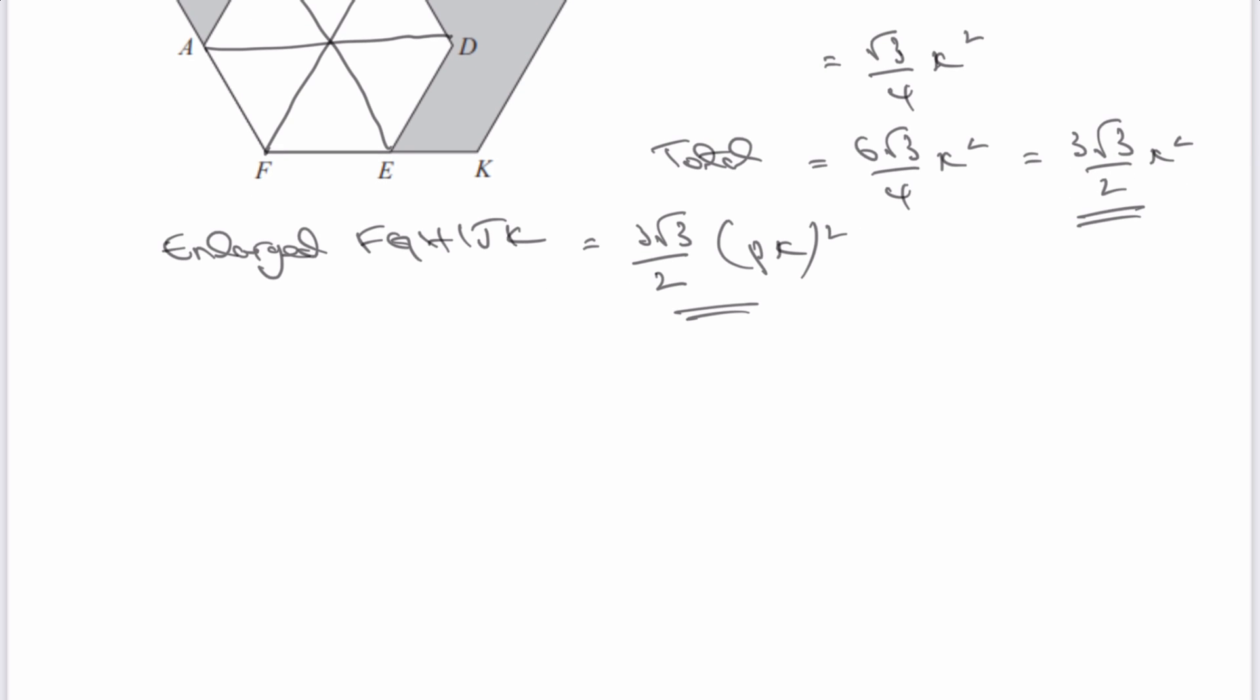So effectively what we've got is a shaded amount, which is going to be equal to 3 root 3 over 2. Now, PX squared, I'm going to expand, that's going to be P squared X squared, and therefore that's going to be minus then the smaller hexagon, which is 3 root 3 over 2 X squared.